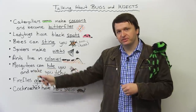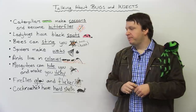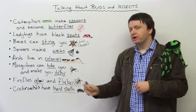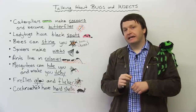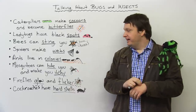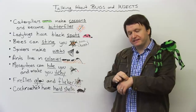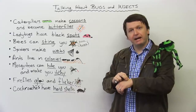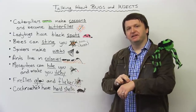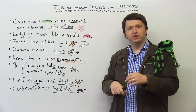Next, mosquitoes. Mosquitoes can bite you and make you itchy. So mosquitoes are the insects that like human blood. And you can say, I was bitten by a mosquito, or a mosquito bit me. You can also say, I have a mosquito bite.